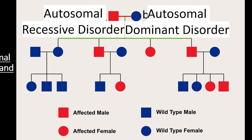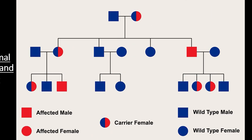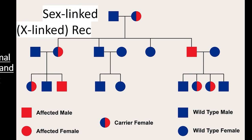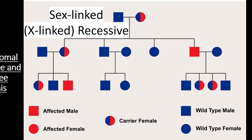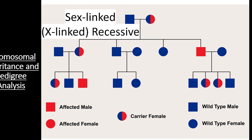Finally, let's see what a pedigree looks like when it shows a sex-linked pattern of inheritance. This pedigree shows a recessive condition carried on the X chromosome. We can assume this is an X-linked recessive condition because males cannot be carriers — they can only be affected or unaffected, since each male gets only one X chromosome. We also see that an affected male and a wild-type female produce only carrier females and healthy males, suggesting the Y chromosome is not involved and that females inherit the broken allele on the X chromosome from their father.